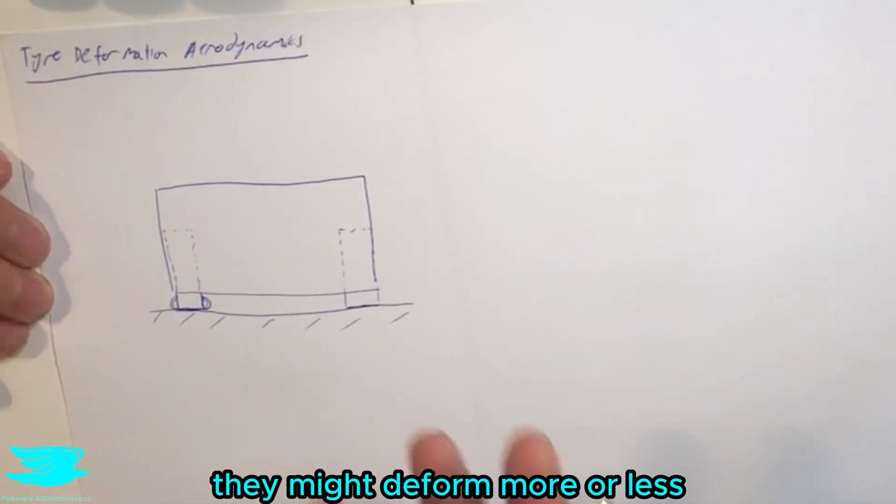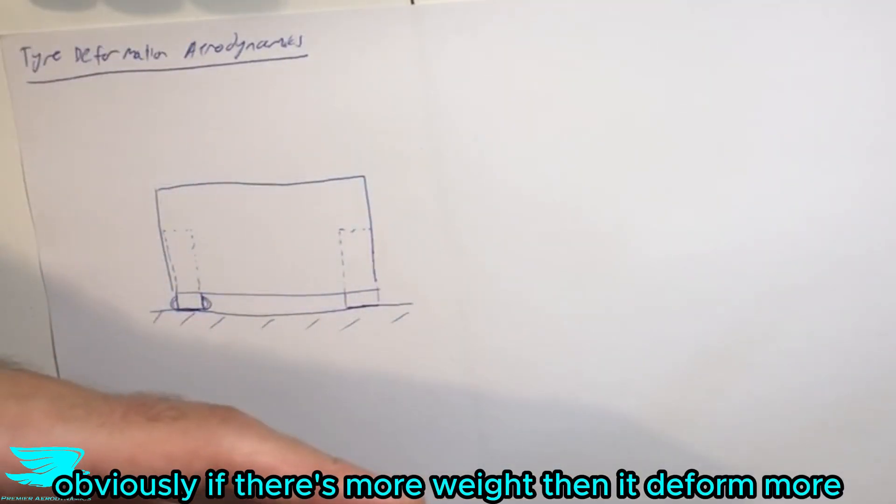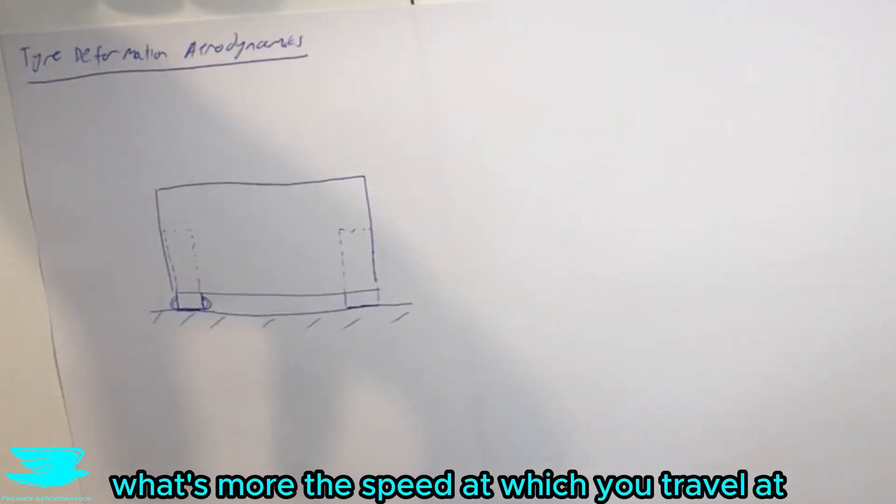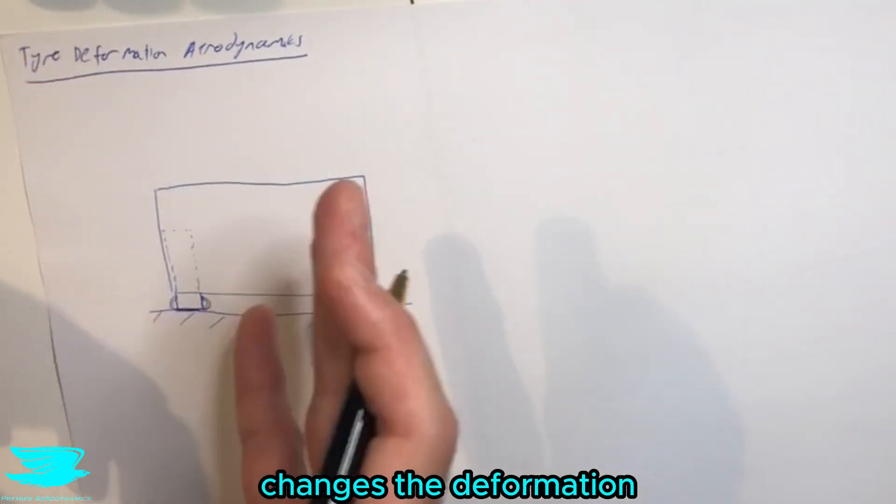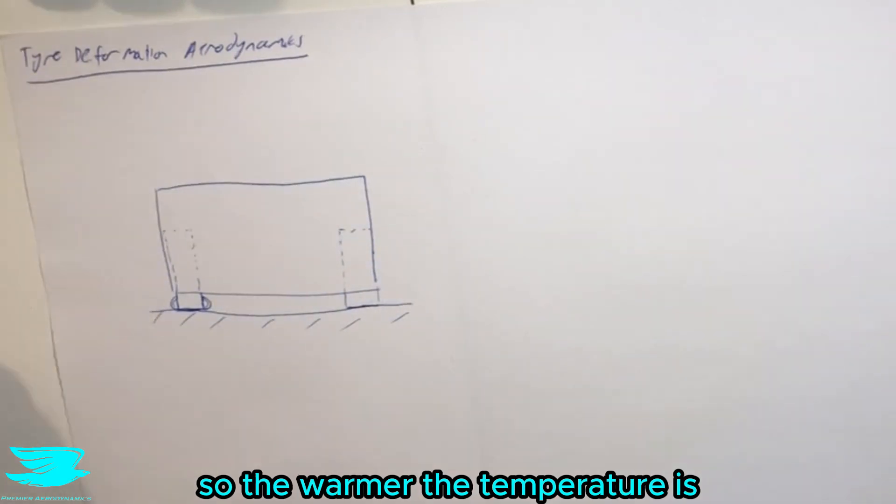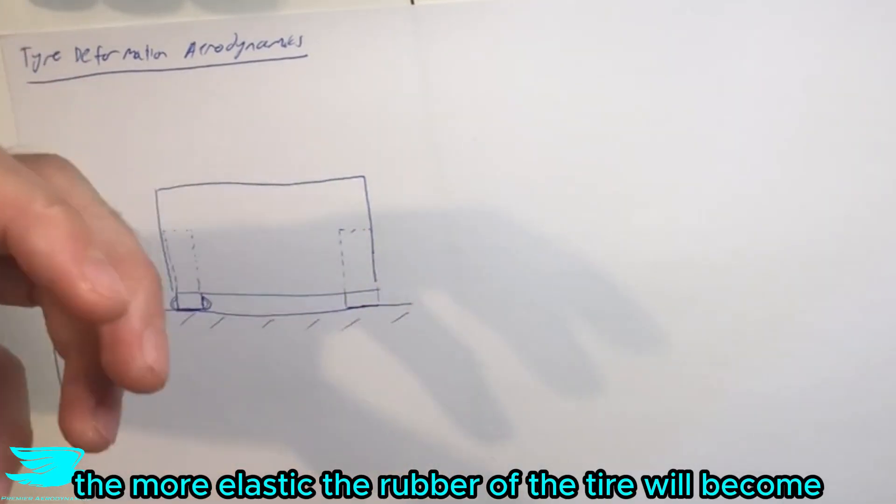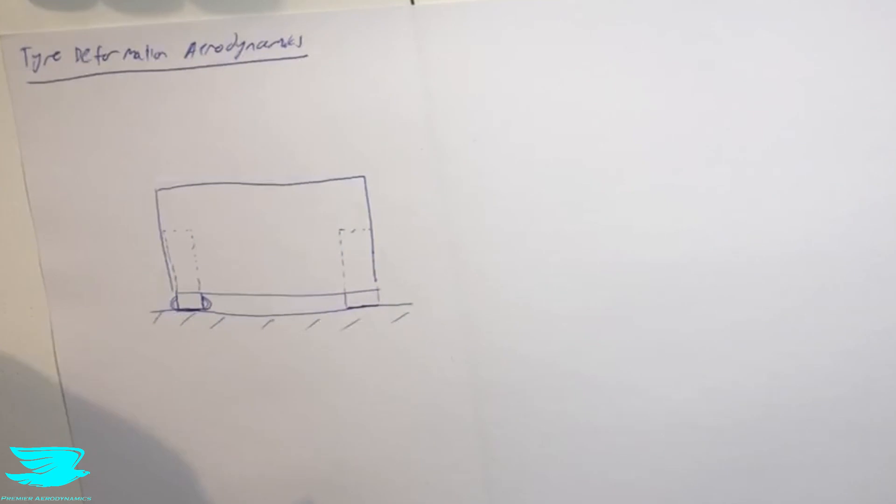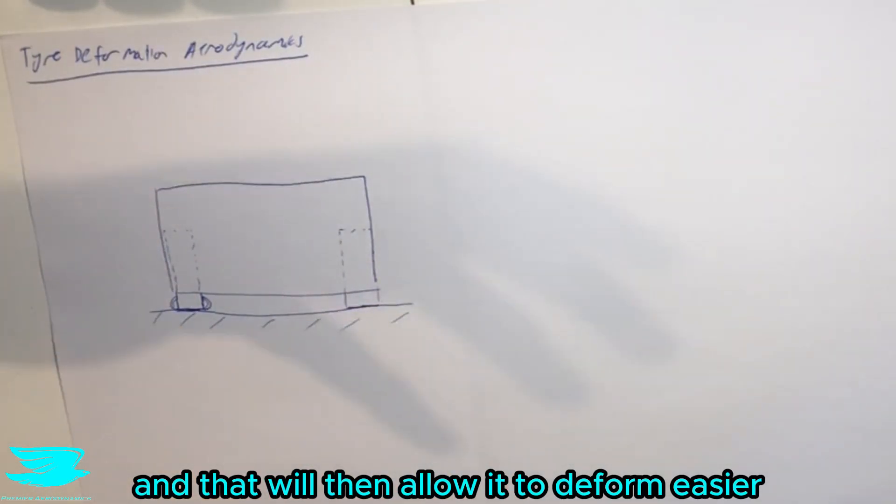They might deform more or less. Obviously if there's more weight then it'll deform more. What's more, the speed at which you travel at changes the deformation, as does even the temperature of the tires. The warmer the temperature, obviously the more elastic the rubber of the tire will become, and that will then allow it to deform easier.